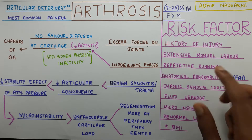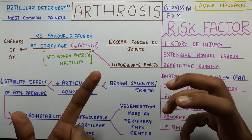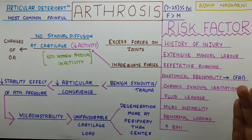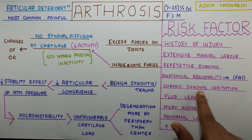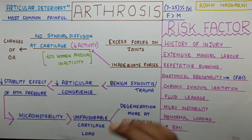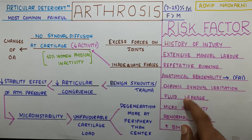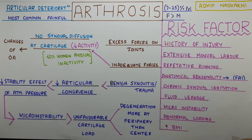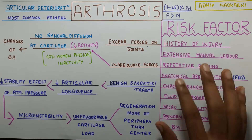Going ahead is anatomical abnormality, which we have seen in our previous videos — something like coxa vara, retroverted acetabulum, and also femoroacetabular impingement like the cam and the pincer impingement. These can be risk factors for degeneration at the hip joint. Apart from that, chronic synovial irritation and fluid leakage can also be a factor. Then there is micro instability, abnormal loading at the hip joint, and also increased BMI — increased body weight — which can translate to excessive force on the hip joint.